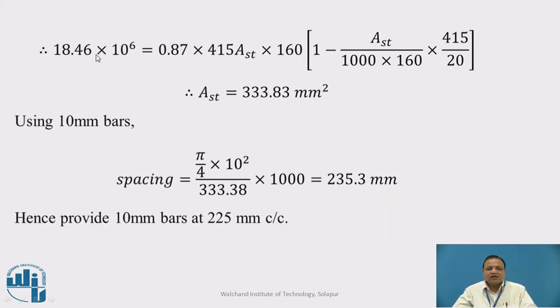Find area of steel in X direction using equation G.1.1B of IS 456. MU equals 0.87 Fy times AST times D times (1 minus AST Fy upon BD FCK). Substituting values, AST works out to be 333.83 mm square. Using 10 mm bar, spacing is area of 1 bar times 1000 divided by AST, which works out to be 235.3 mm. Hence provide 10 mm diameter HYSD bars at 225 mm center to center. We provide alternate bent up bars.